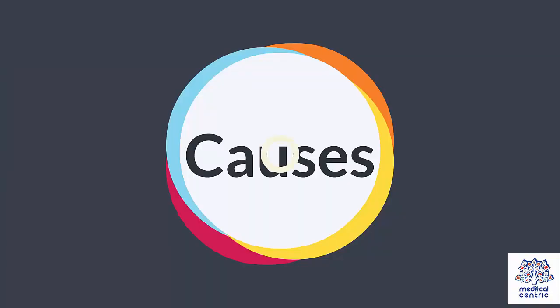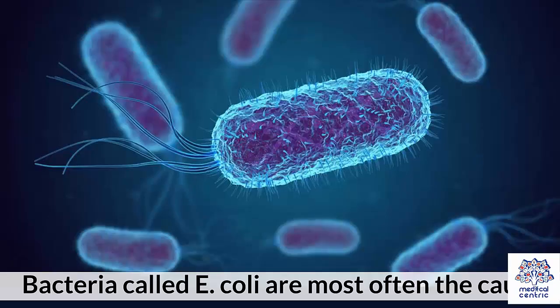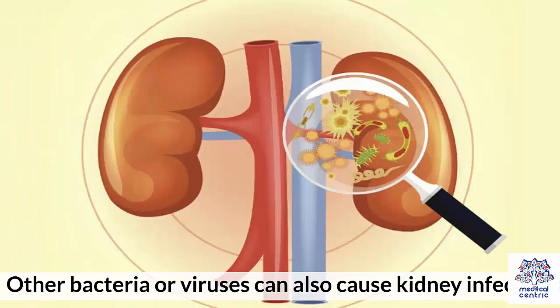Causes: Kidney infections usually start with a bladder infection that spreads to your kidney. Bacteria called E. coli are most often the cause. Other bacteria or viruses can also cause kidney infections.